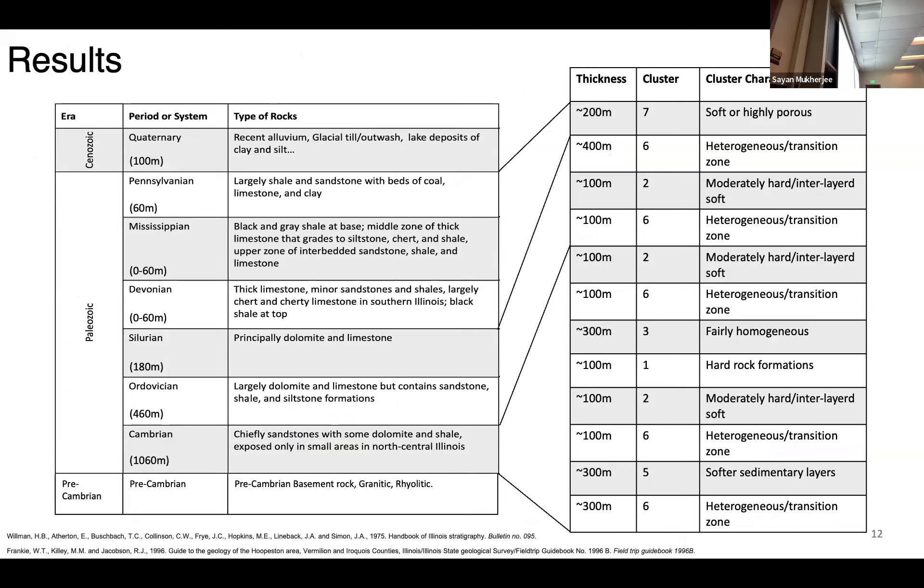From the literature review of knowing the depth and the types of rocks, we then correlate this thickness, cluster, and cluster characteristics with the geology of the area. Since we know the depth or the thickness of each layer, we correlate each of the thickness and see if the cluster characteristics match the type of the rocks.